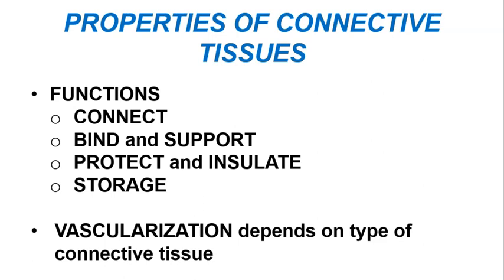Some connective tissues, such as bone, will function in protection, while others like adipose tissue will protect as well as insulate. Some connective tissues will also function in a storage capacity — they will store nutrients or minerals that can be used by the body when they are needed.